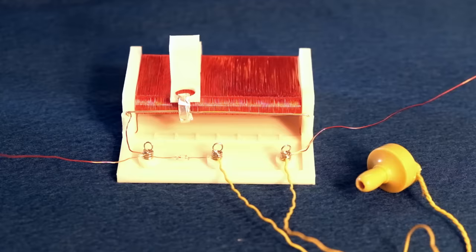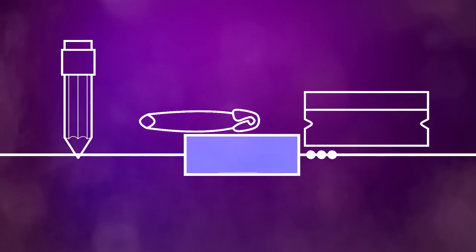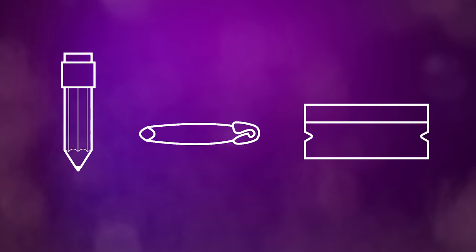Now before I go, I want to try something crazy. Can we make our own diode from regular everyday items? Remember, a diode allows current to flow in only one direction. Let's make our own using a pencil, a safety pin, and a razor blade.